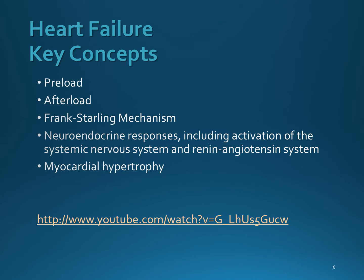Lastly, the renin-angiotensin system causes vasoconstriction to pull more blood to the heart, and by doing so it causes decreased renal perfusion, increased preload and afterload, and ultimately pulmonary congestion.